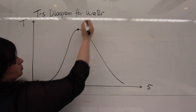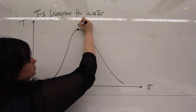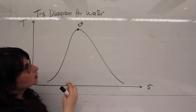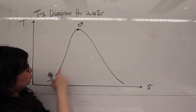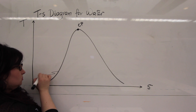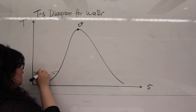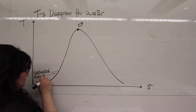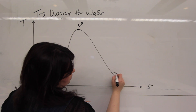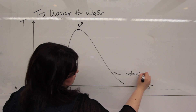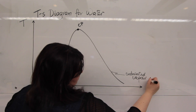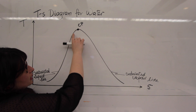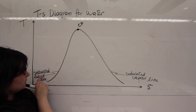We have a point up here. This point is the critical point — we denote it as CP. It's an important point because past this point, we don't have a distinction between different phases. The point connects two lines. This line is termed the saturated liquid line, while this line coming down here is the saturated vapor line.